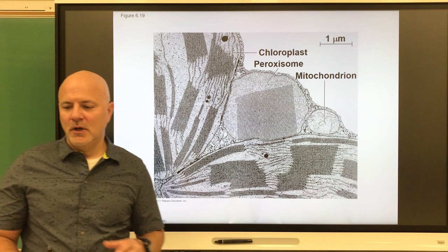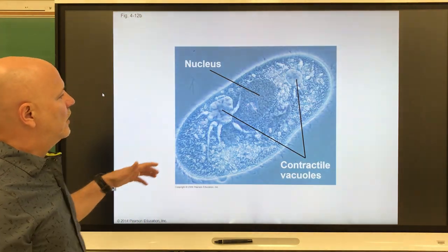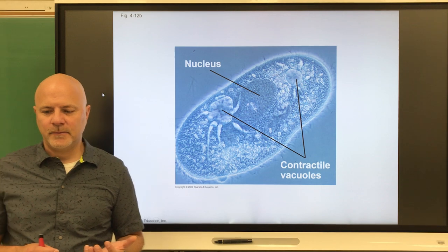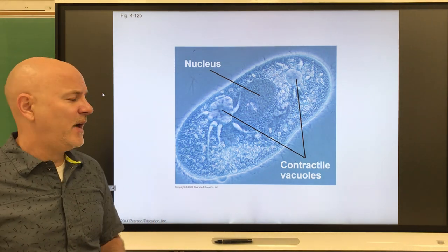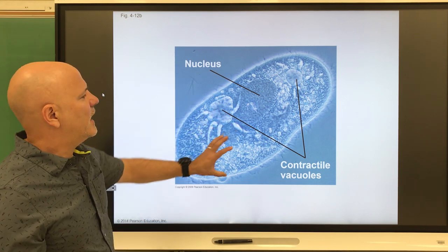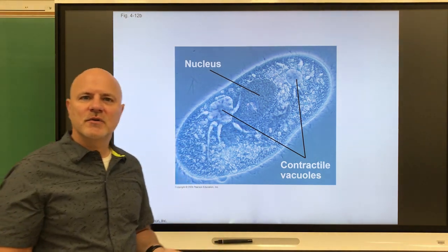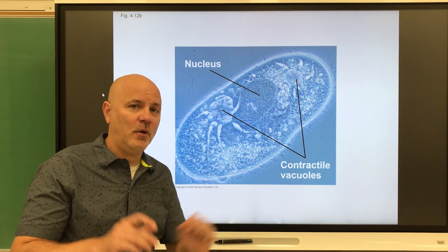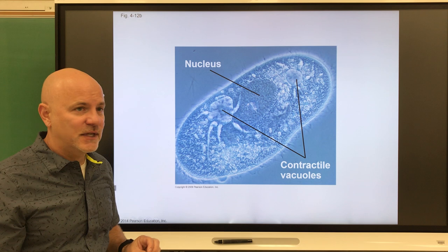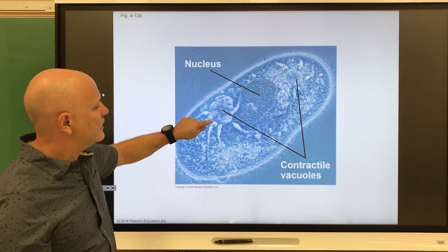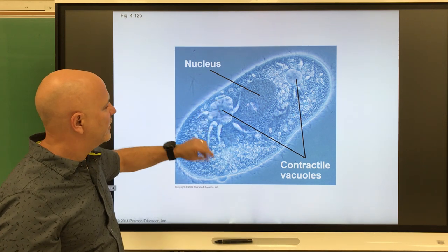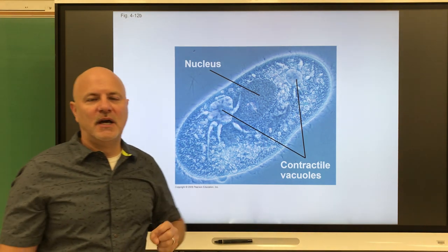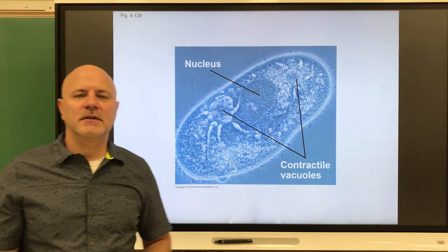Vacuoles are large membranous sacs. The first type is a contractile vacuole — a vacuole that removes excess water from a cell. These are found in protists or protozoans in fresh water. Water constantly enters their cell by osmosis, so they collect this water into contractile vacuoles. They contract periodically and push water out through small tubes. They must constantly do this; otherwise these small cells could literally explode.